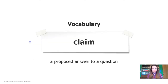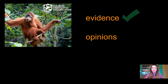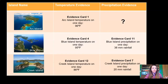Let's add the word claim to our vocabulary. A claim is a proposed answer to a question. We have three claims here and we need to decide which one we're going to recommend to the Wildlife Protection Organization. When we make our recommendation, we need to make sure that our argument is supported by evidence, not by opinions. So let's take a look back at our data chart.